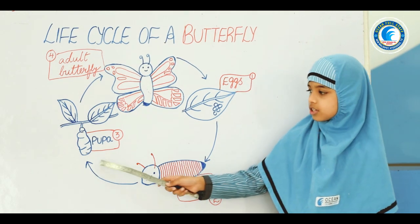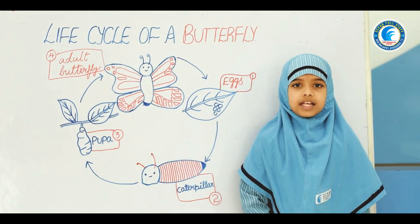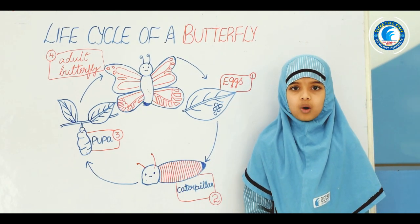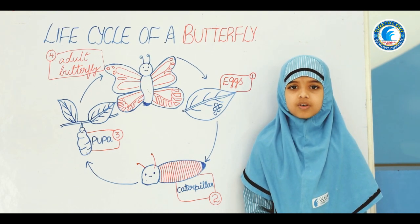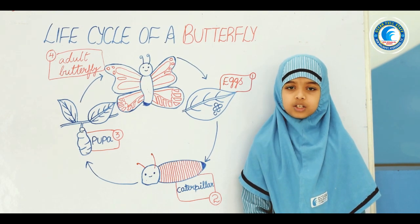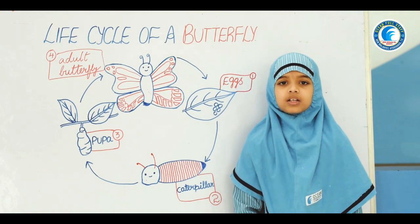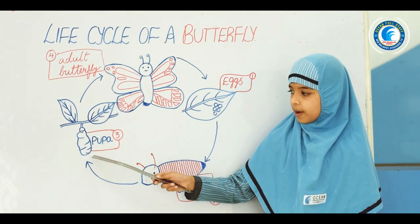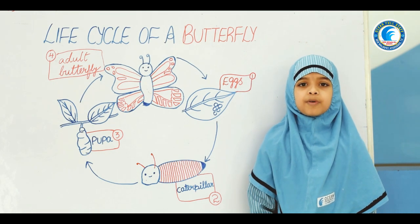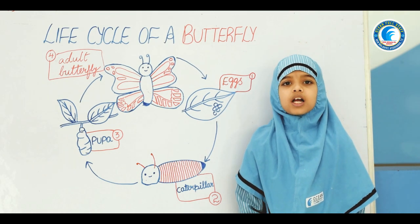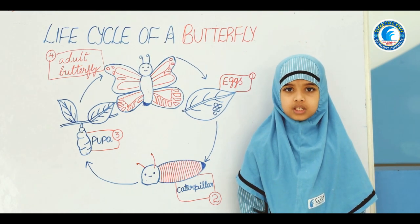At the third stage, a caterpillar hangs upside down under a leaf and creates a cover around itself called a cocoon. This is a pupa. Then an adult butterfly comes out through metamorphosis.